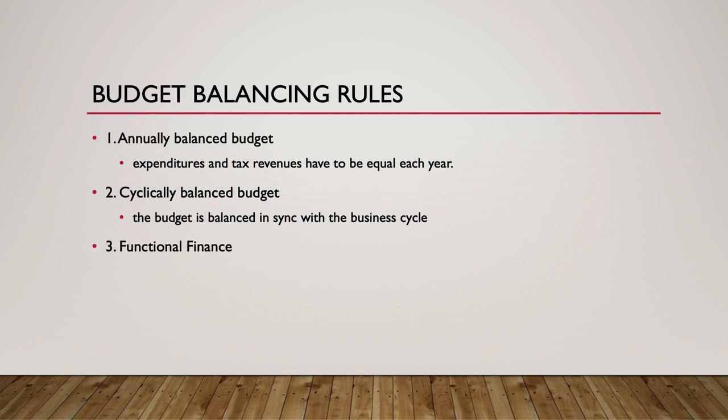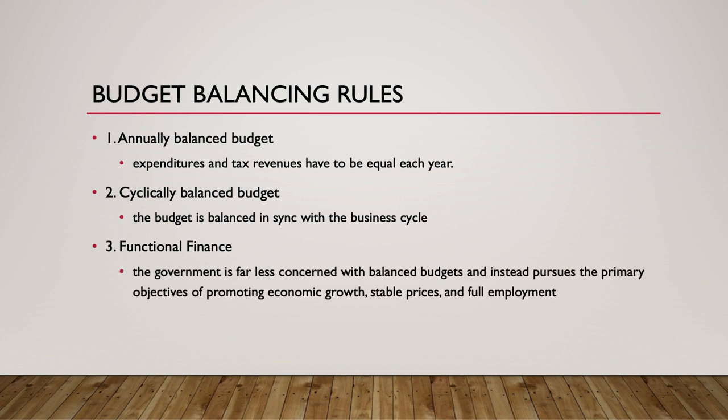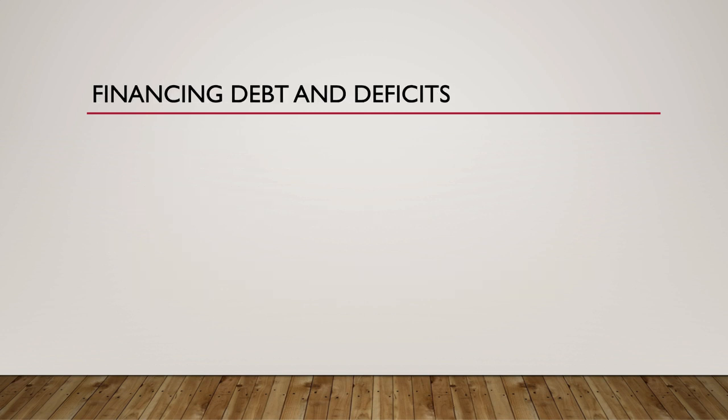Number three is functional finance. Under functional finance, the government is far less concerned with balanced budgets and instead pursues the primary objectives of promoting economic growth, stable prices, and full employment. This is the approach currently taken by the U.S. federal government. The obvious downside is that annual deficits are a regular occurrence, and this results in an ever-increasing national debt over time.